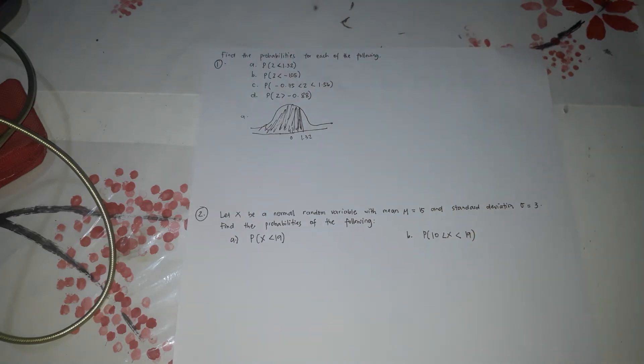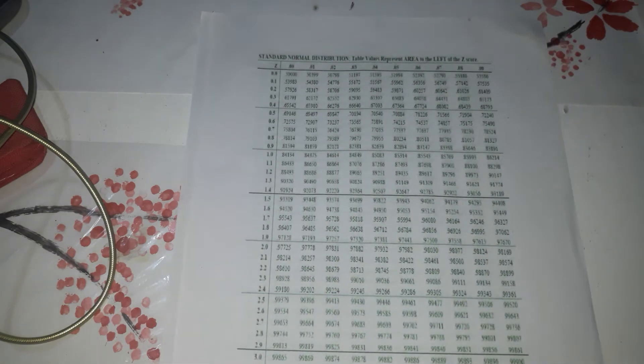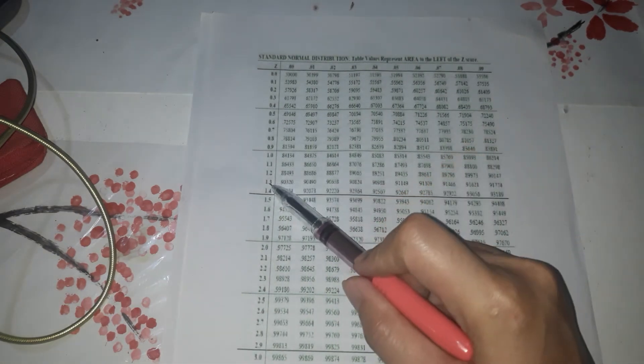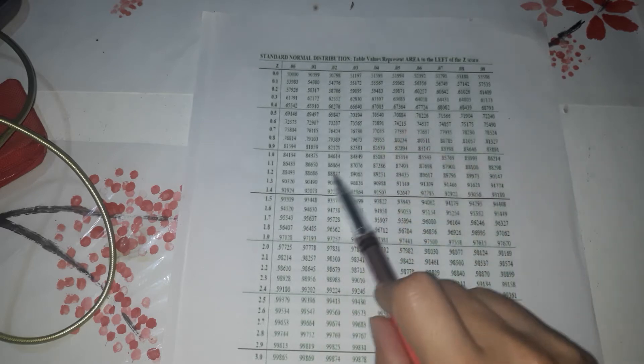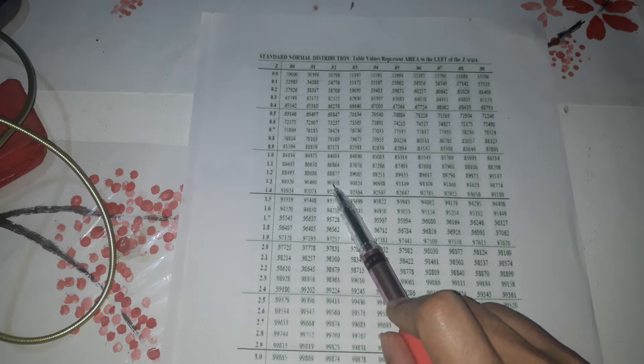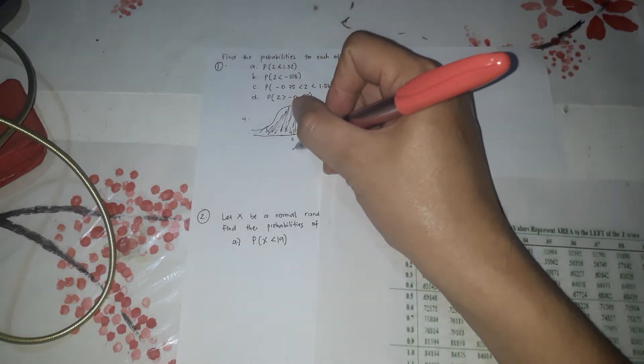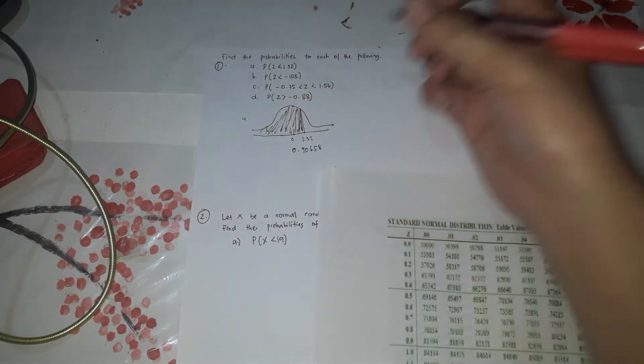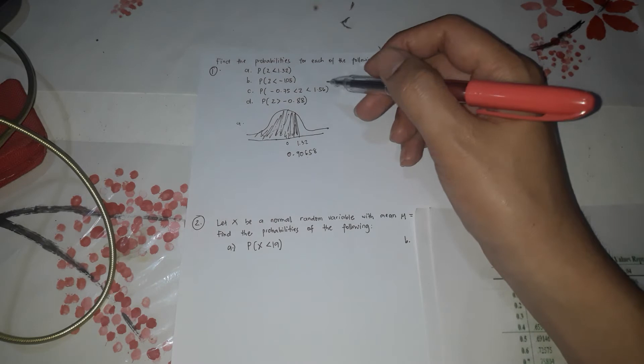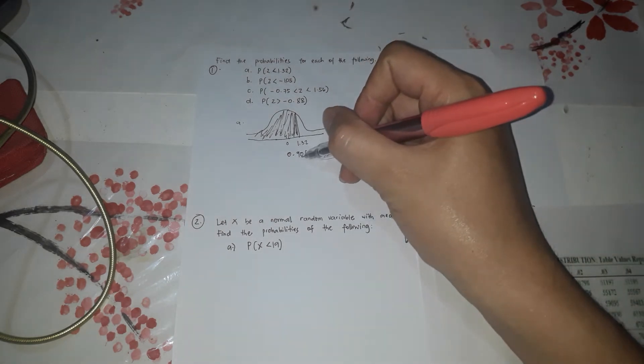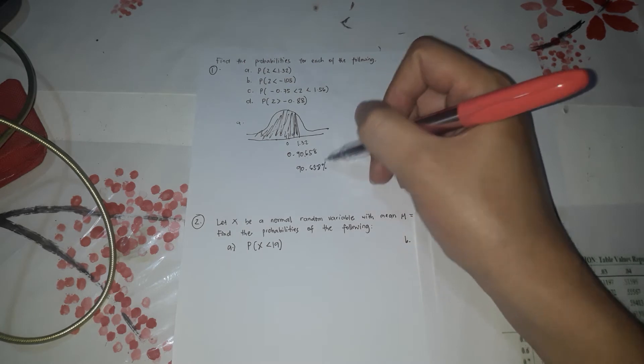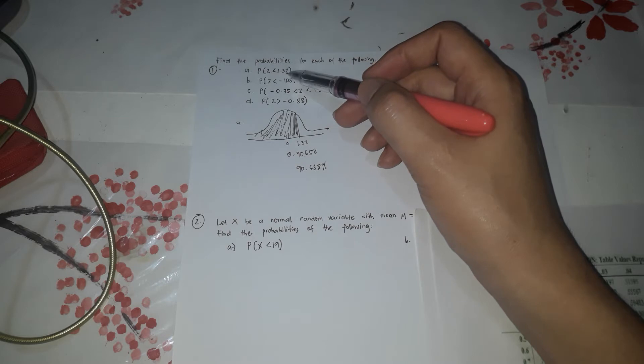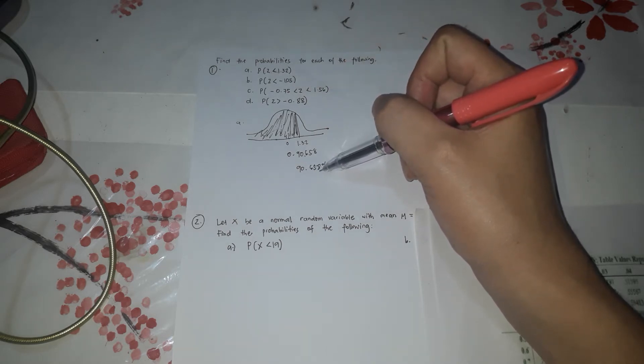So to the left, now we're going to use the table to find the area. So this is 1.32. Let's say 1.32, so 3, 2. This is 0.2, so 1.302. So 0.9658. So the area is 0.9658. So the probability is, because it's usually in percent, so you're just going to move the decimal point by 2.